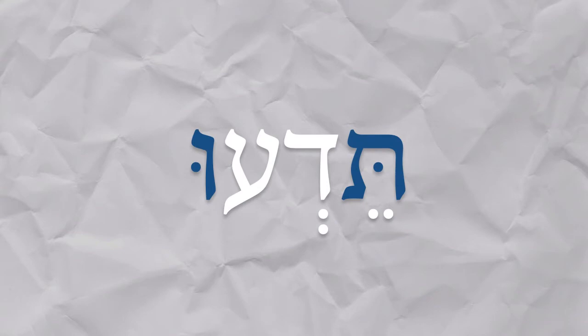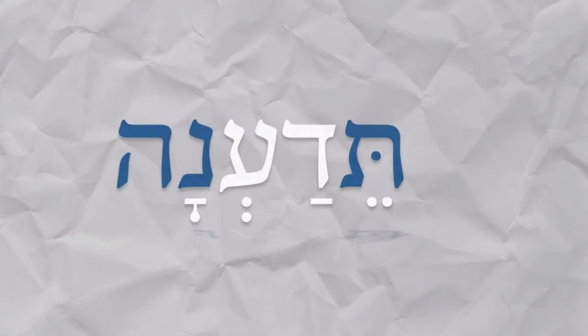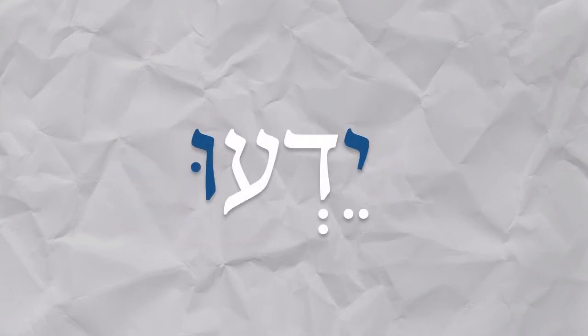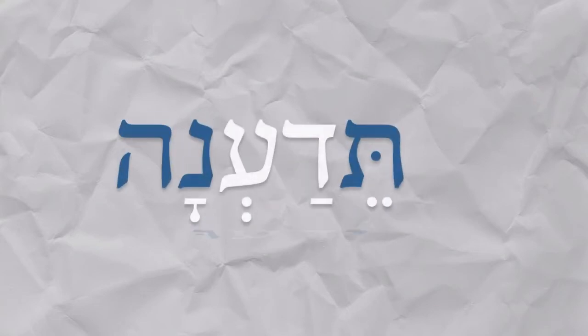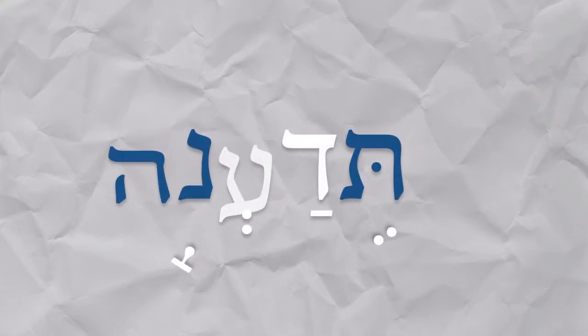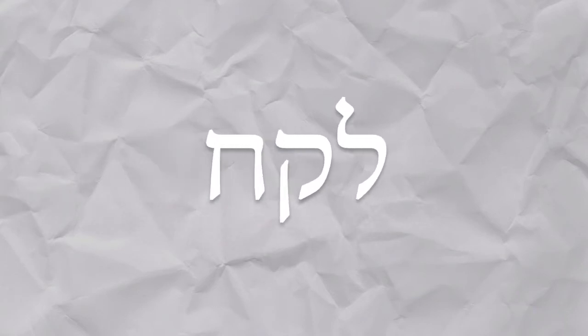Atem: teda-u. Aten: teda-na. Hem: yeda-u. Henna: teda-na. So that's a good example that comes up a lot. Here's another common one: we have lekakh, 'to take.'